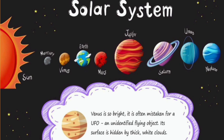Venus. Venus is so bright it is often mistaken for UFO, an unidentifying flying object. Its surface is hidden by thick white clouds.